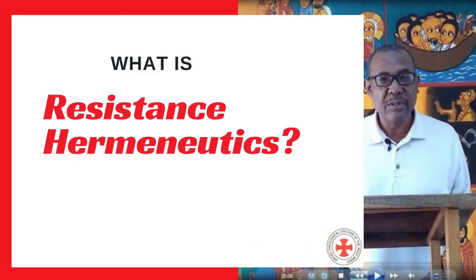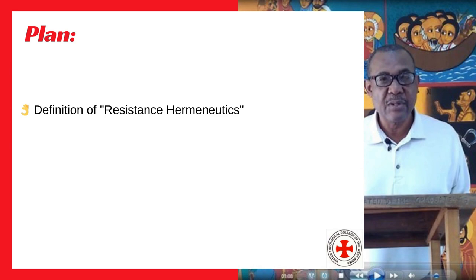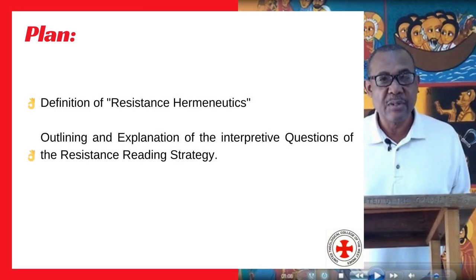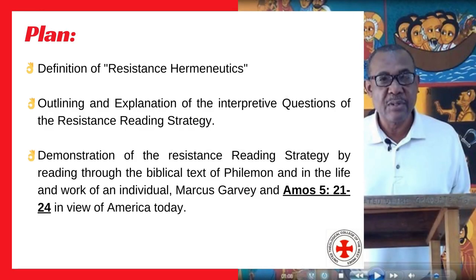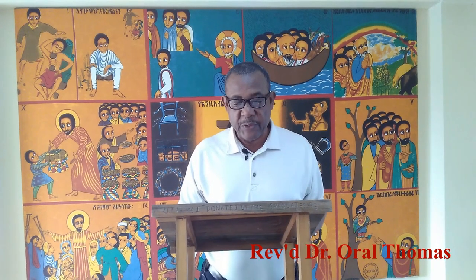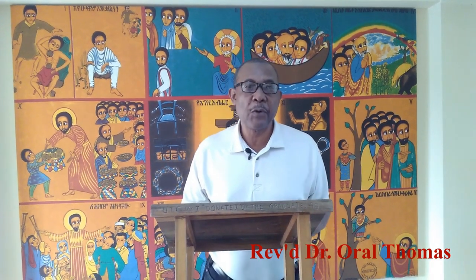My task is to explain by way of example what resistance hermeneutics is. I'll go about my task first by defining what resistance hermeneutics is, second by outlining the interpretive questions of the resistance reading strategy, and third by demonstrating that strategy through a reading of the biblical text of Philemon, the life and work of Marcus Garvey, and Amos 5:21-24 in view of America today.